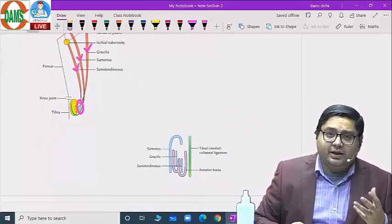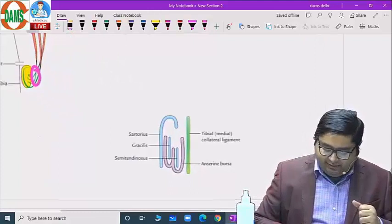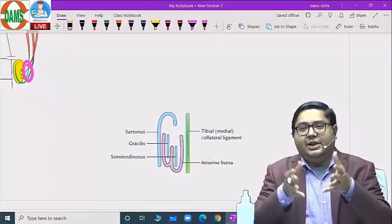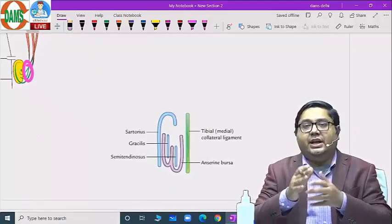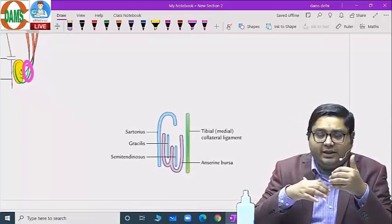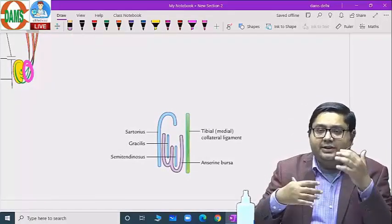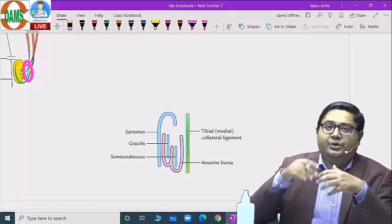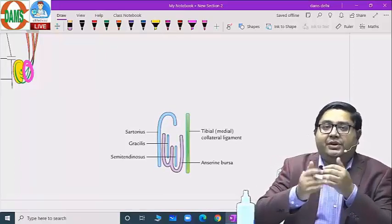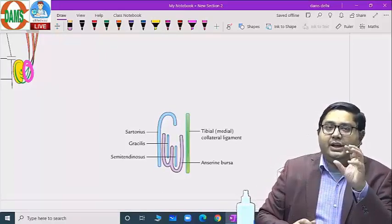This is how they are attached. When they come very close to each other, the chances of wear and tear is very high because of the friction. So to avoid friction between them and with the bone, they have been provided with the bursa which is called as anserine bursa.